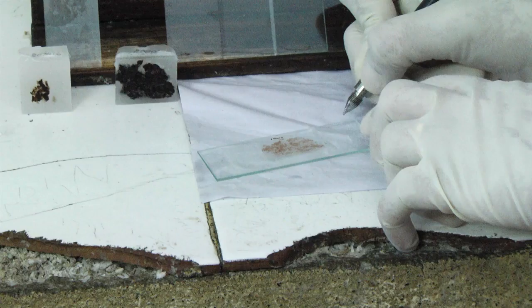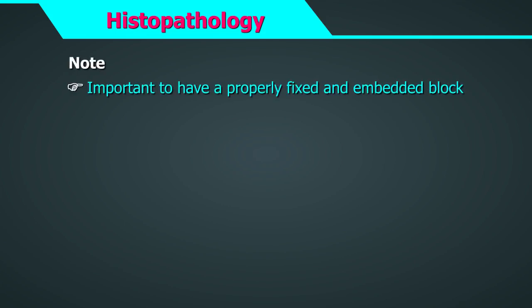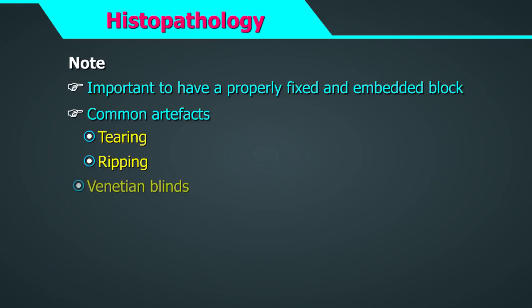It is important to have a properly fixed and embedded block, as artefacts can be introduced during sectioning. Common artefacts include tearing, ripping, venetian blinds, holes, and folding.